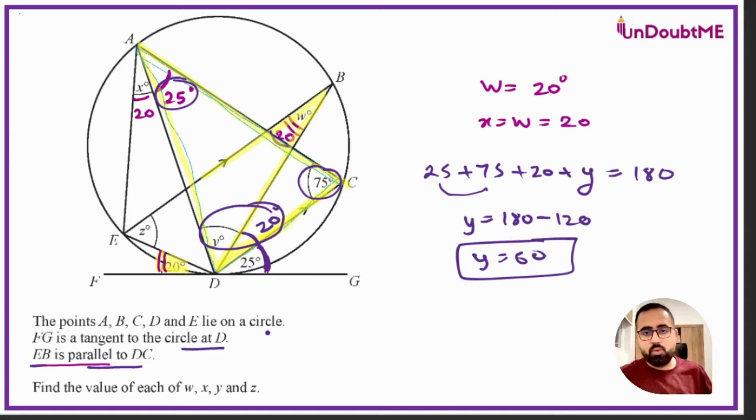Once I'm done with y value, I can finally talk about z value. For that, if y is 60, this small angle is 20, this is 25, and the other side also it is 20. I can get this missing angle because they all are lying on a line, so the sum of all of them will be 180. So 20 plus 60 is 80, 80 plus 20 is 100, 125, and 180 minus 125 will give me 55. So this angle is 55.